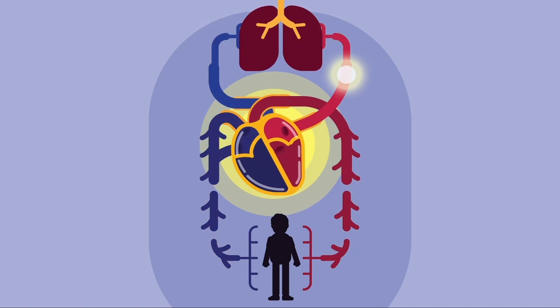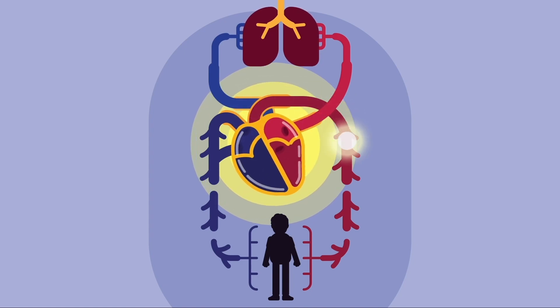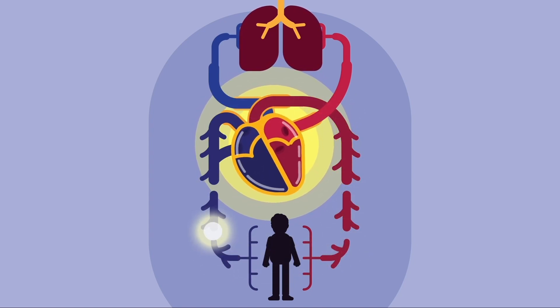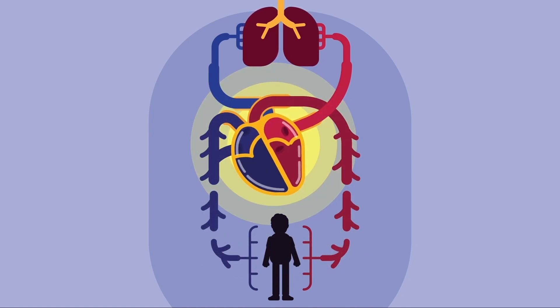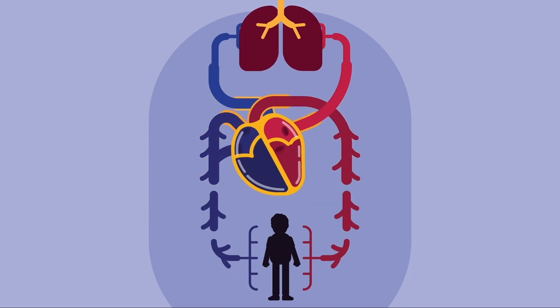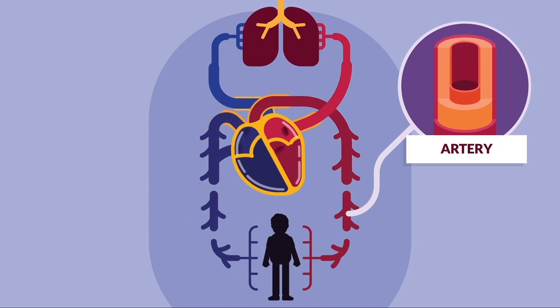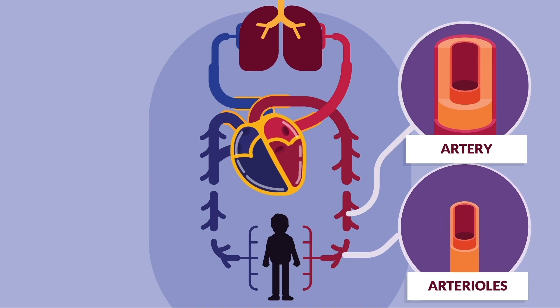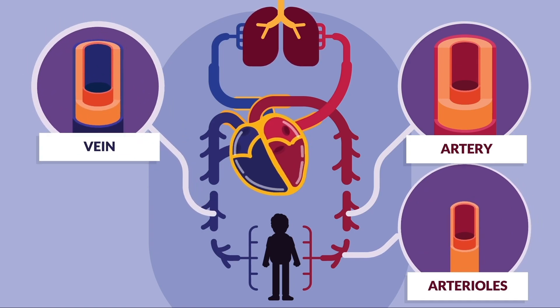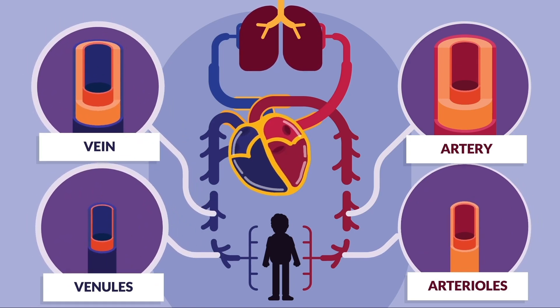Blood passes through the heart twice in one complete circulation. The blood vessels consist of arteries, arterioles, veins, venules, and capillaries.